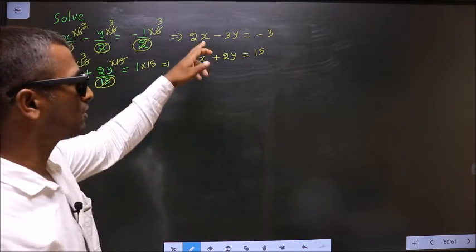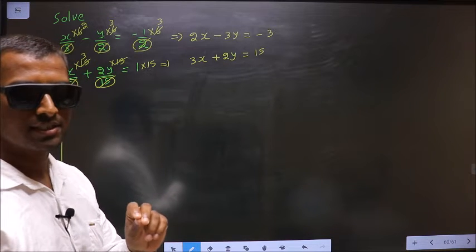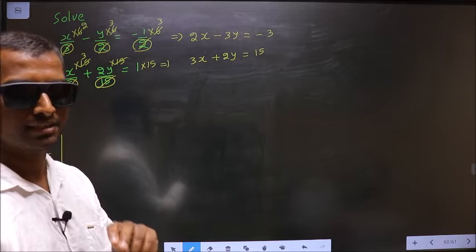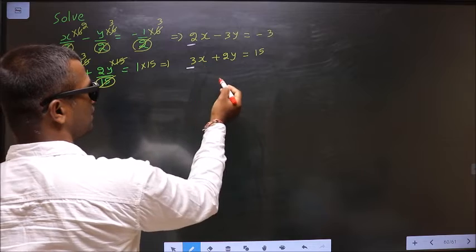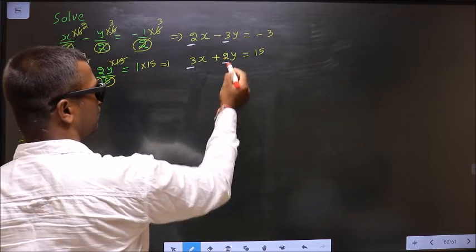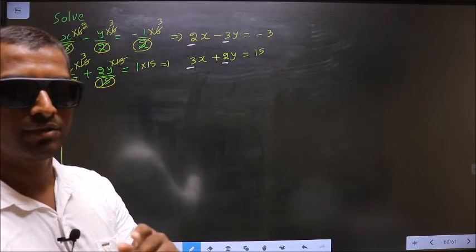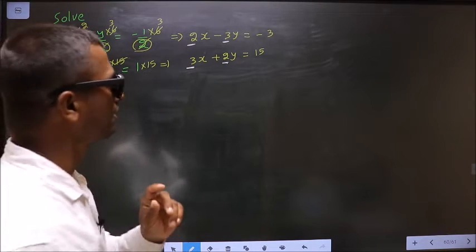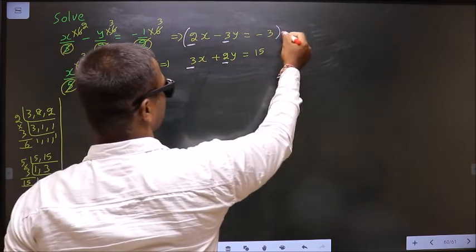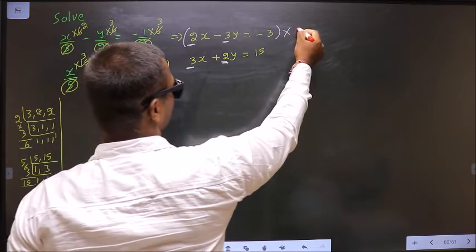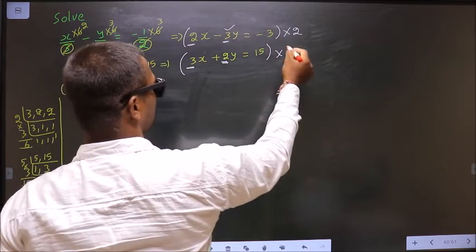Now to solve these equations, I should make either x coefficient same or y coefficient same. See here. Here x coefficient is 2. Here x coefficient is 3. Here y coefficient is 3. Here y coefficient is 2. So now I have decided to make y coefficient same. I should multiply this equation with this number 2, and this equation with this number 3.